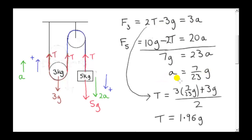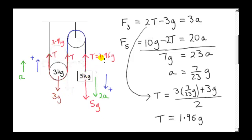Substituting back into the top equation gives the tension T. The upward force on this pulley is 2 times 1.96G, which is 3.91G. We can clearly see that 2T is greater than the weight of the pulley, and the weight of the five kilogram mass 5G is greater than T.